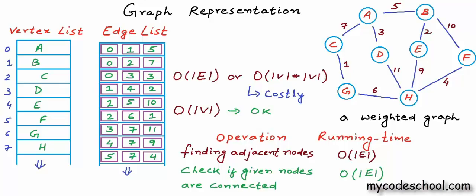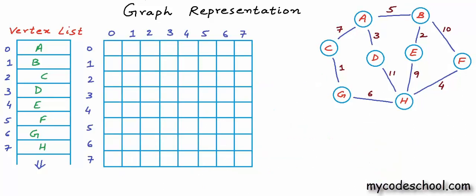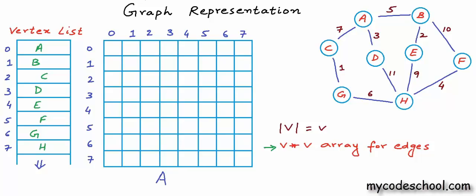One possible design is to store the edges in a two-dimensional array or matrix — a V×V matrix where V is the number of vertices. Here I have drawn an 8×8 array because the number of vertices in the example graph is 8. Let's name this array A. If the graph is unweighted and we have an index between 0 and V-1 for each vertex stored in a vertex list, we can say A is the 0th node, B is the 1st node, C is the 2nd node, and so on, picking up indices from the vertex list.